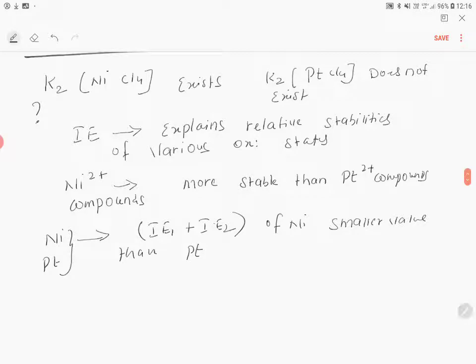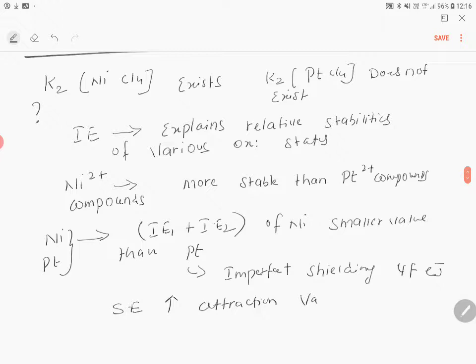In the case of platinum, due to the imperfect shielding of 4F electrons, the shielding effect increases attraction between valence electrons and the nucleus. Therefore, the first two ionization energies of platinum are higher than nickel. That is the reason platinum 2-plus compounds are less stable than nickel 2-plus compounds.